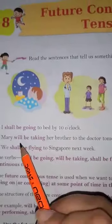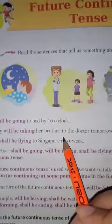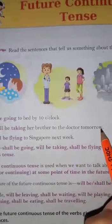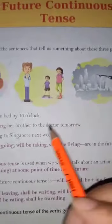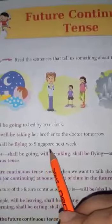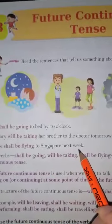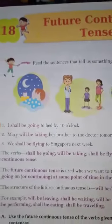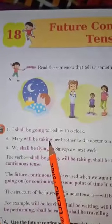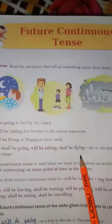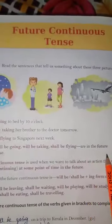Second: Mary will be taking her brother to the doctor tomorrow. Third picture: We shall be flying to Singapore next week. So the verbs we are using here — shall be going, will be taking, shall be flying — are in the Future Continuous Tense.